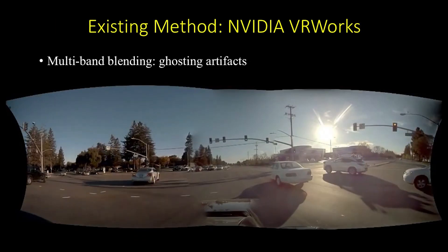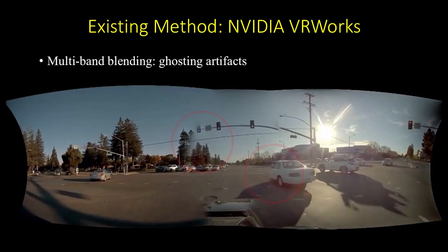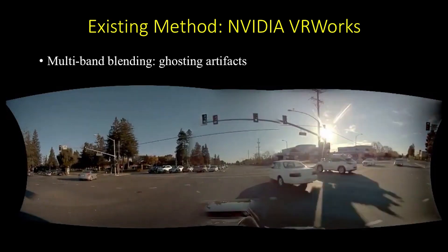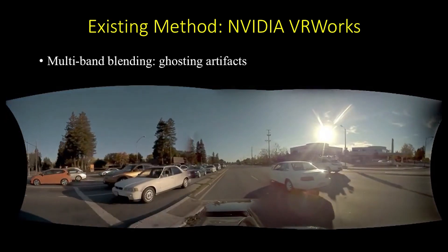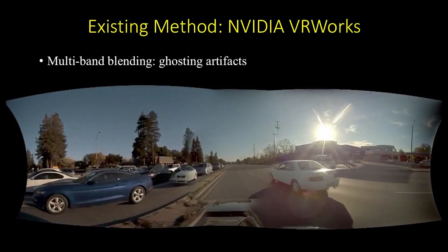A recent approach, NVIDIA VR Works, relies on camera calibration and depth estimation for alignment. When the depth estimation is not accurate enough, it often generates ghosting artifacts.